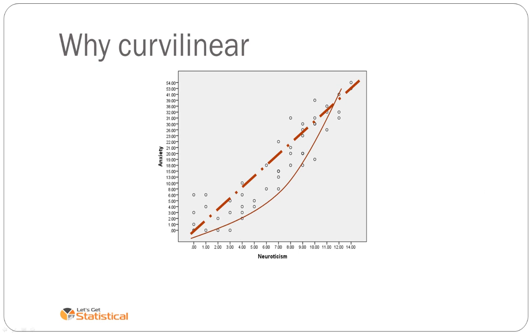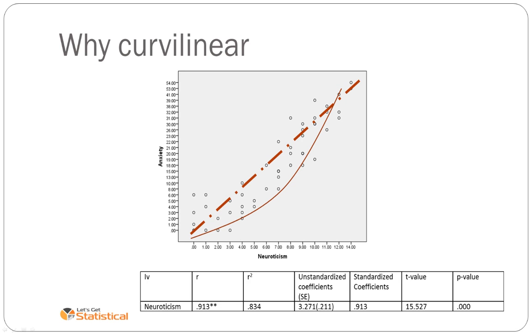This could be what is known as a quadratic relationship, that is, as neuroticism increases, anxiety increases at an accelerating rate. However, looking at just the linear relationship, it is significant with a p-value of less than 0.05, and it accounts for 83.4% of the variance.